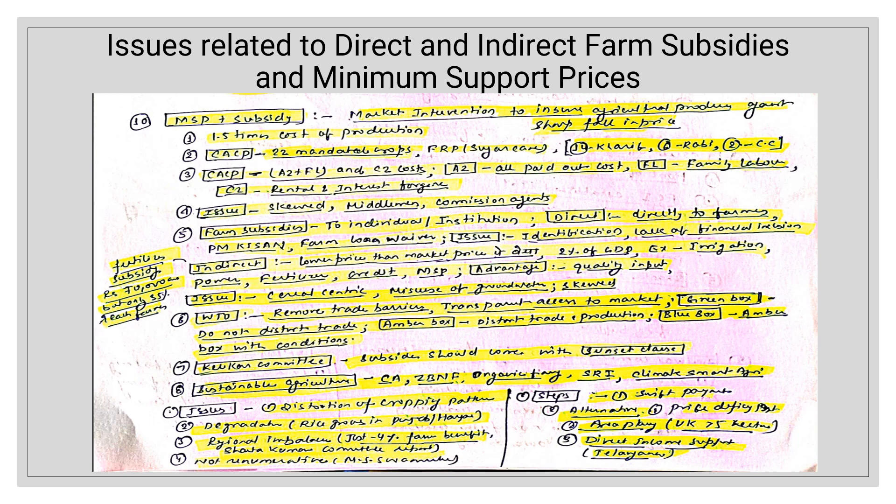As alternatives to subsidies, we can promote sustainable agriculture so that crop production increases while maintaining balance with nature. Options include zero-budget natural farming, organic farming, System of Rice Intensification (SRI) — a technique to produce more rice with less water — and climate-smart agriculture. These can all be suggested as alternatives.